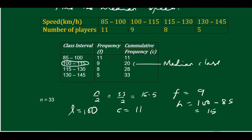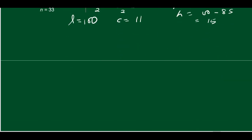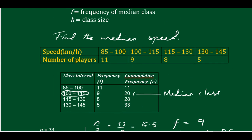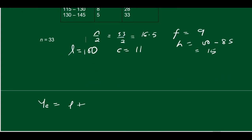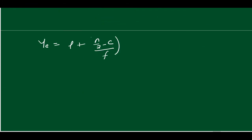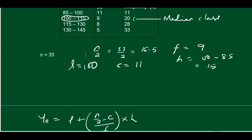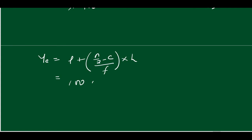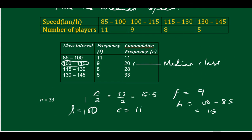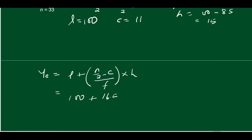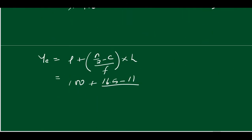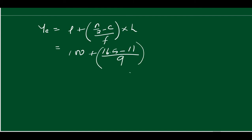Now I plug all of this into the equation to get the median. Median = L + (N/2 − C)/F × H. L is 100, N/2 is 16.5, C is 11, F is 9, H is 15. So: 100 + (16.5 − 11)/9 × 15.